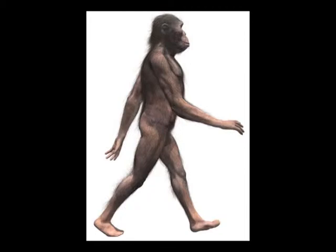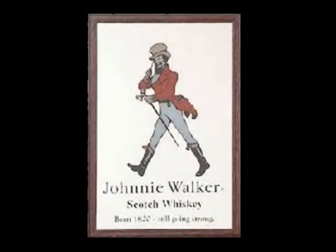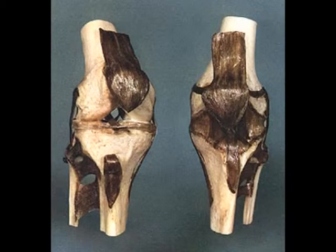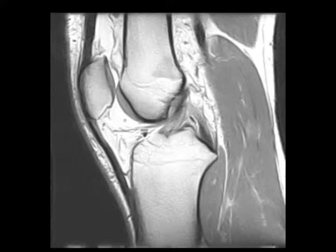Le genou est l'articulation clé de la bipédie verticale. Sans son verrouillage, la limitation de l'extension de la jambe à 180 degrés, la marche jambe tendue serait irréalisable. Ce verrouillage est le fruit de l'association d'un système musculo-tendineux — quadriceps, tendon rotulien — et osseux — fémur, rotule. La morphologie de cet appareil, codée génétiquement depuis la fin de l'ère primaire, apparaît chez l'homme particulièrement sensible au processus adaptatif mis en place lors de l'apprentissage de la marche.